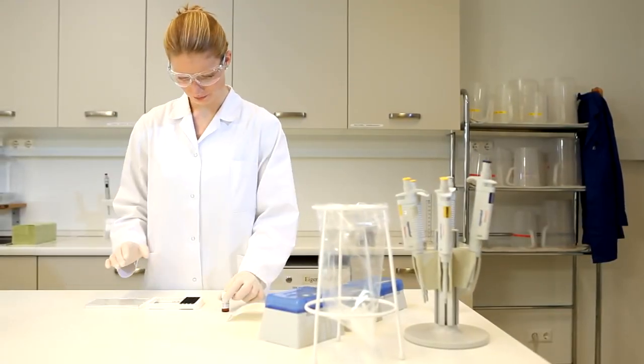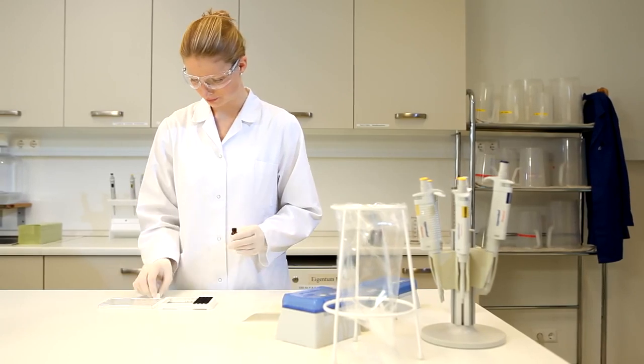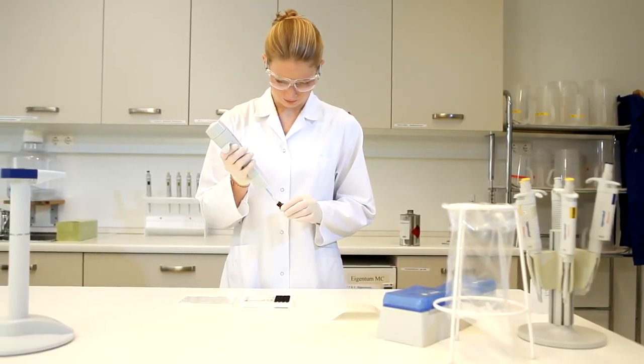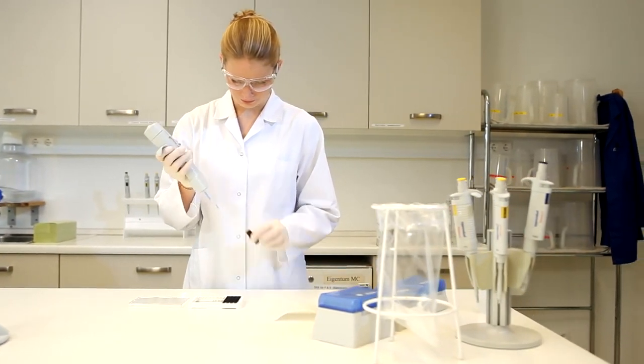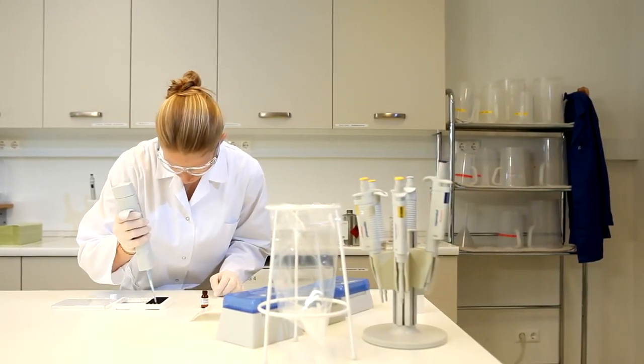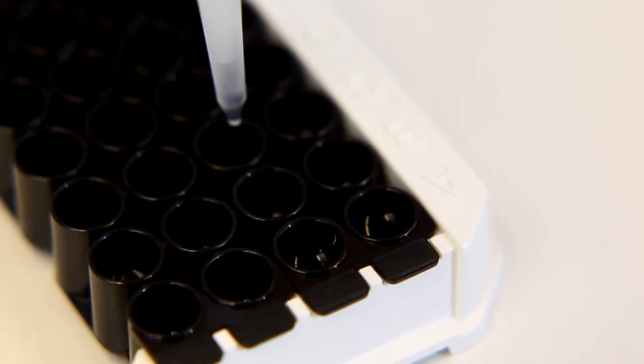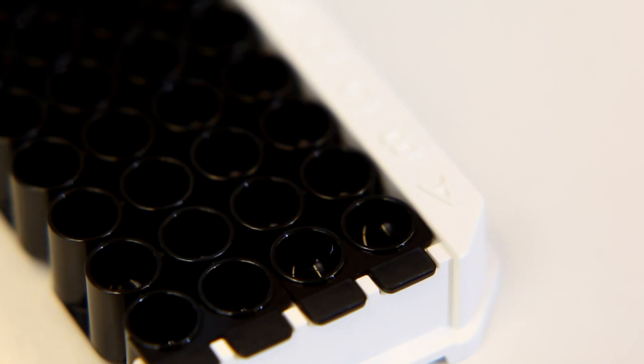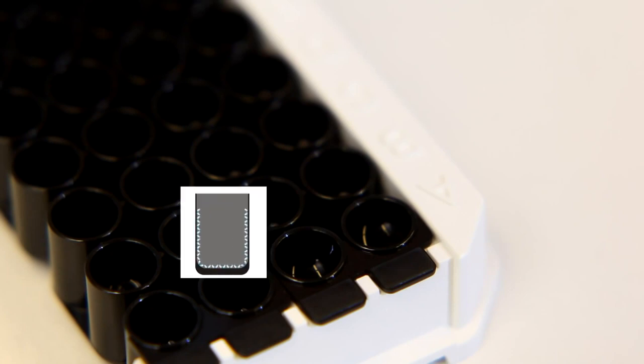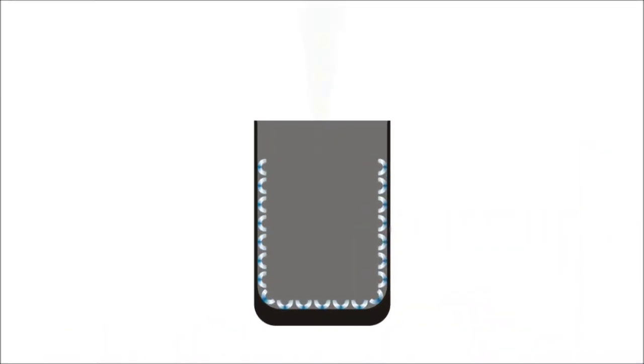Now it's time to start the endotoxin binding in the wells. This process cannot begin until the binding buffer is added. Add 20 microliters of binding buffer to each well. It is important to pipette carefully to avoid cross-contamination. As soon as the binding buffer is added to the wells, the phage protein coating on the well surface is activated. The binding of endotoxin in the sample begins. As with a classical ELISA, the target analyte endotoxin is selectively bound to the surface of the pre-coated wells in the Endolysa plate.